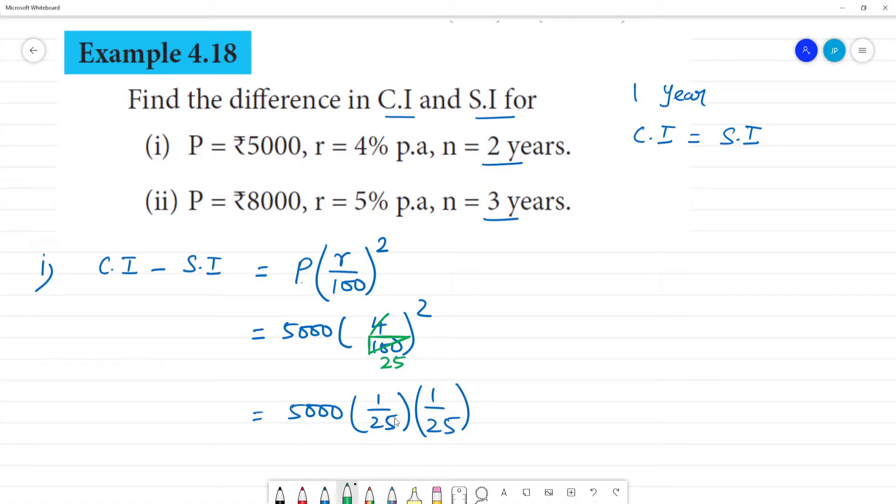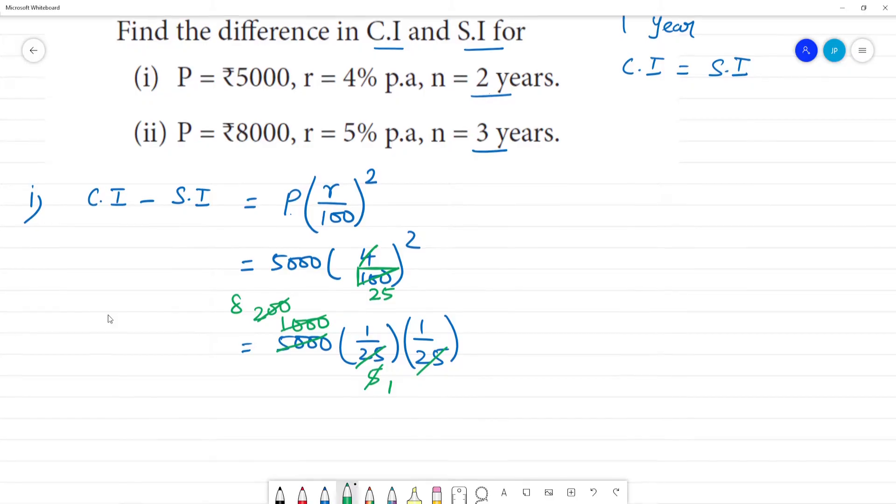So cancel. This is 5, 5, 25 is 1000. 1 5 is 5, 200. 1 25 is 25, 8. So what is the answer? Answer is 8. The difference between the simple interest and the compound interest here is 8 rupees.